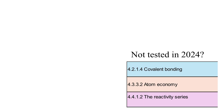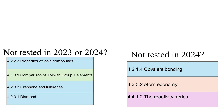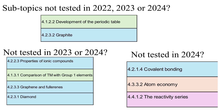It's also worth looking at subtopics that were not tested in previous years, as that makes them slightly more likely to come up in the near future. In 2024 there was nothing about covalent bonding, atom economy, or the reactivity series. For the last two years there has been nothing about the properties of ionic compounds, comparing transition metals with Group 1 elements, graphene and fullerenes, or diamond. And for the last three years there has been nothing about the development of the periodic table or graphite, making these topics slightly more likely to be assessed in 2025 — though obviously no guarantees.